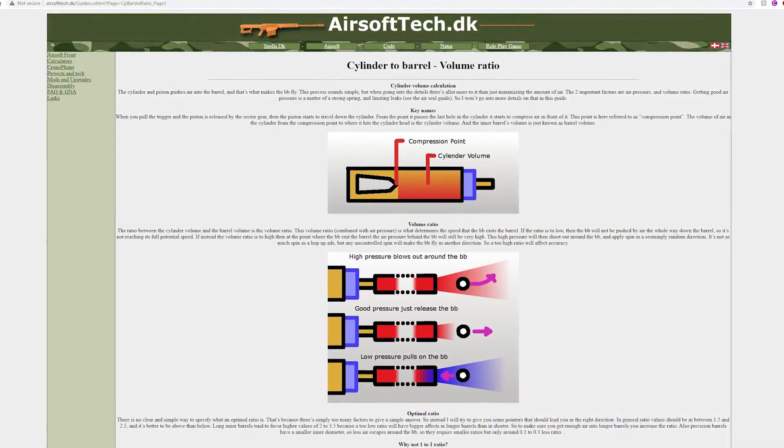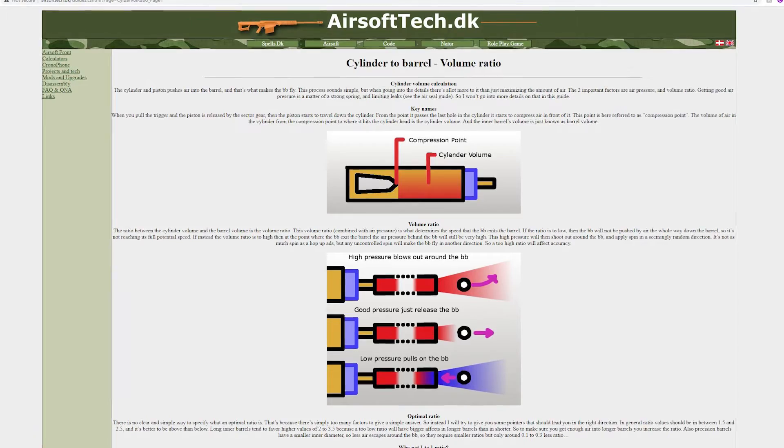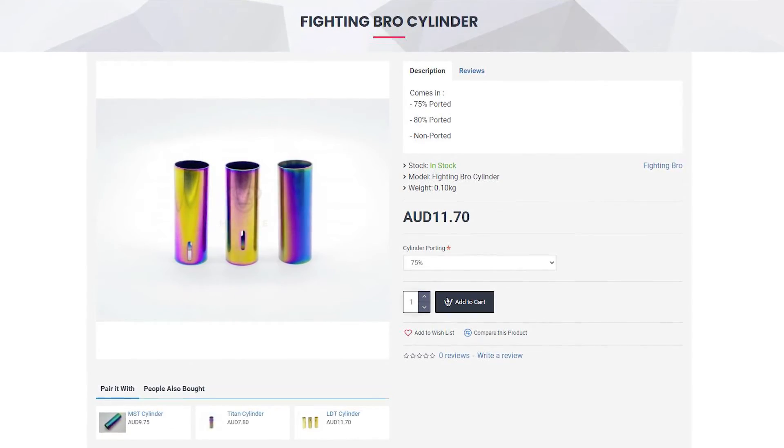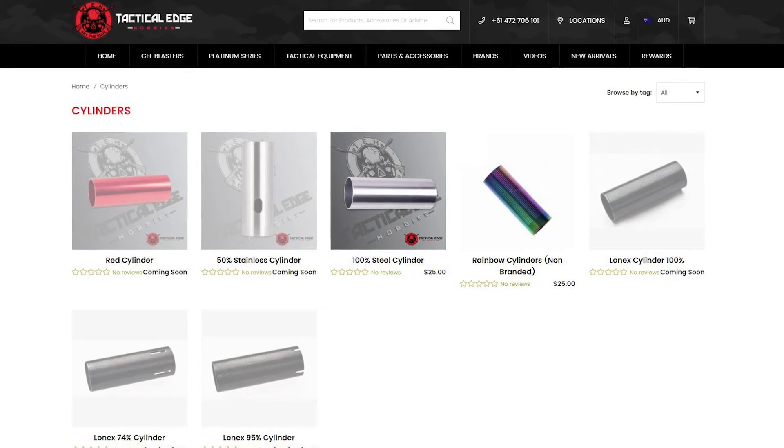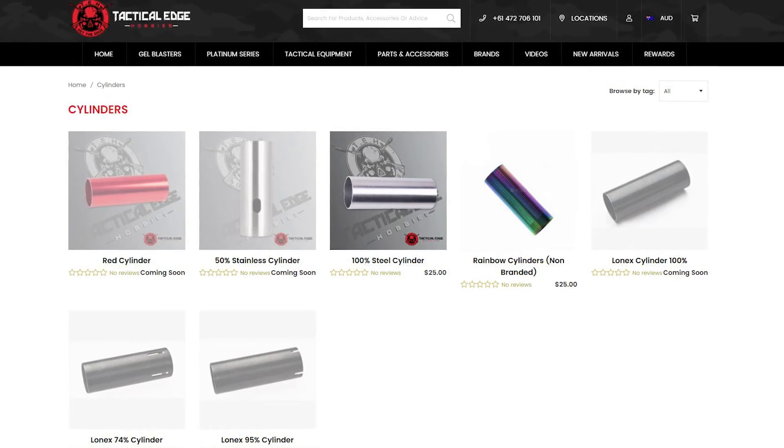This website I have been using as a guide explains with photos really well why this is important. The best way to get the right ratio would be to match the cylinder to your desired barrel length, and if adjustments need to be made, you can cut down your barrel to get the right amount.